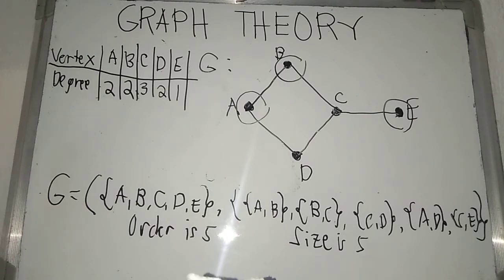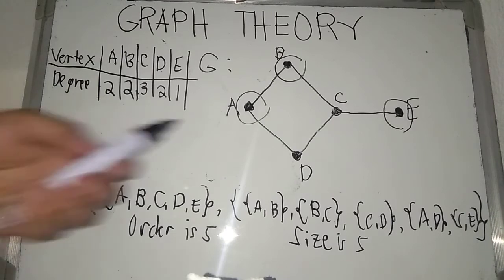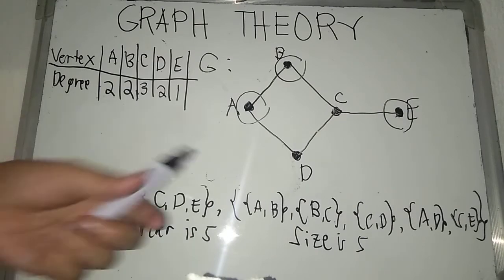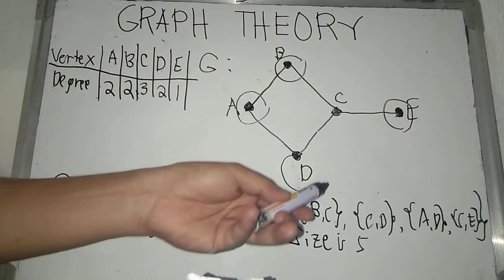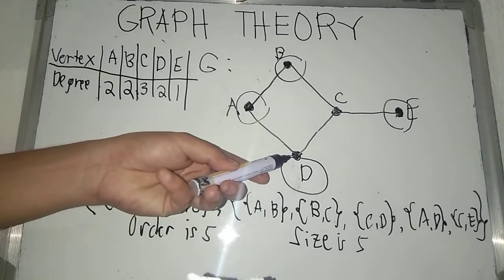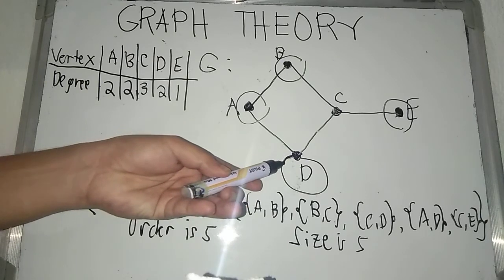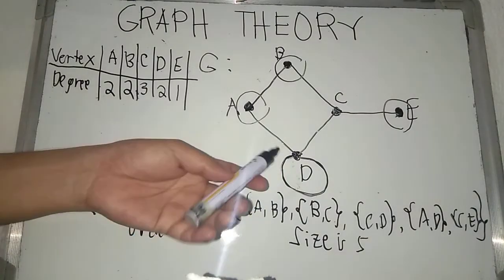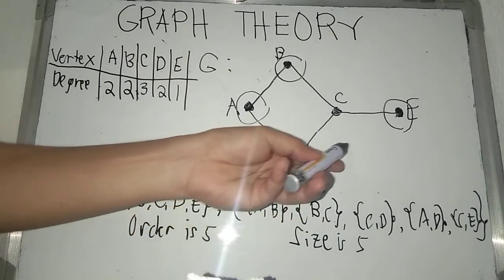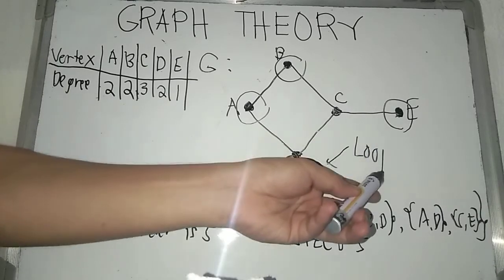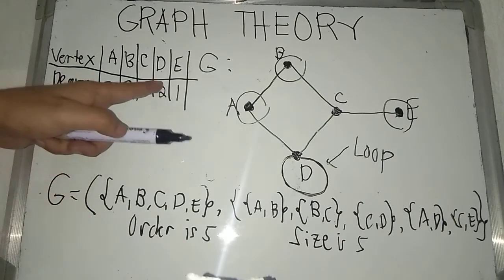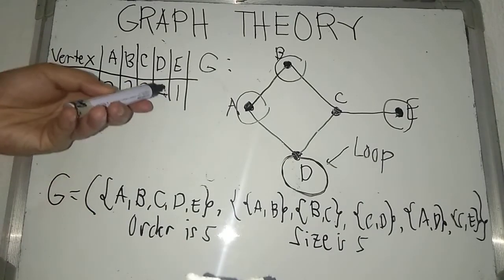Now, there are cases where our vertex has a loop. A loop, by definition, is actually a curve from a particular vertex to itself. This is an example of a loop — it's an edge from a particular vertex which is connected to that vertex itself. So, at this point, if you draw a loop, the degree of our vertex D is not two anymore, but we have four.